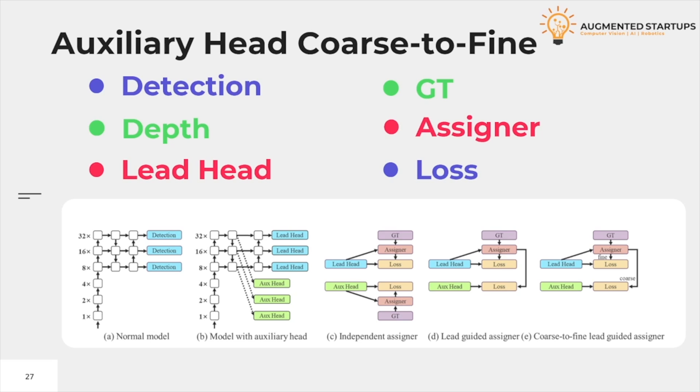The reason to do this is that the lead head has a relatively strong learning capability. So soft labels from it should be representative of the distribution and correlation between source data and the target. The final soft label is the same as the soft label generated by lead head guided label assigner. And the coarse label is generated by allowing more grids to be treated as a possible target by relaxing the constraints of the possible sample assignment process.